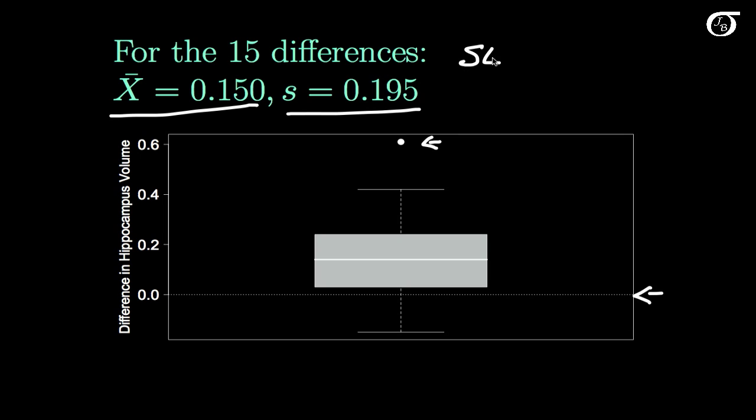To do so we need our standard error. The standard error of x bar is just our regular old standard error from before: s over the square root of n. This is simply going to be 0.195 over root 15, the number of differences that we have. This turns out to be 0.050. That is our standard error that we're going to use in our regular old one-sample formulas.